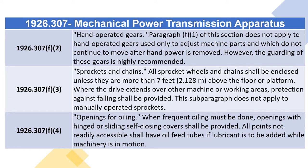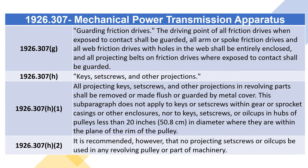1926.307(f)(4): When frequent oiling must be done, openings with hinged or sliding self-closing covers shall be provided. All points not readily accessible shall have oil feed tubes if lubricant is to be added while machinery is in motion. 1926.307(g) Guarding Friction Drives: The driving point of all friction drives when exposed to contact shall be guarded. All armor spoke friction drives and all web friction drives with holes in the web shall be entirely enclosed. All projecting belts on friction drives exposed to contact shall be guarded.